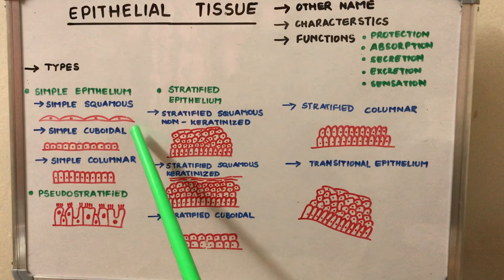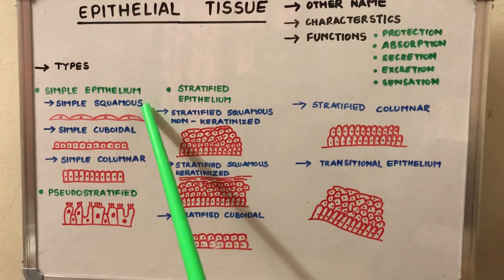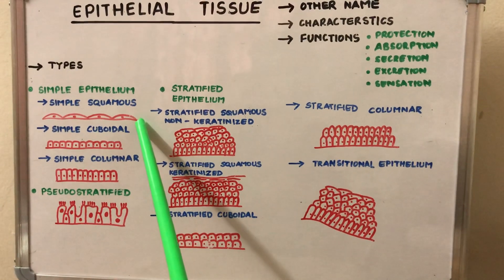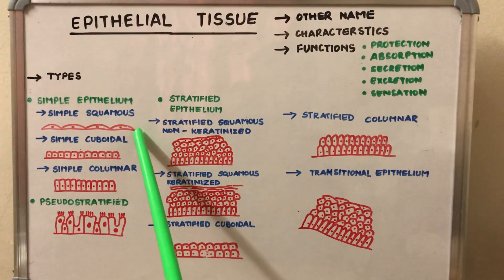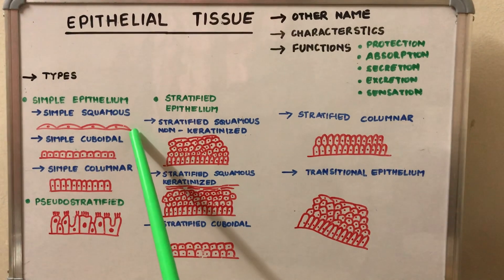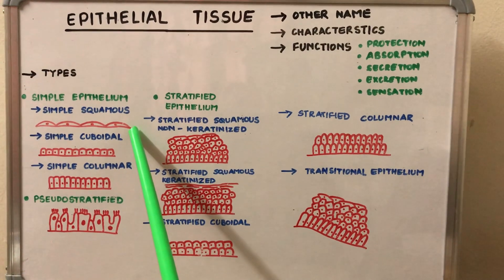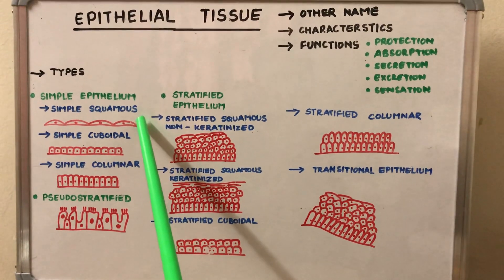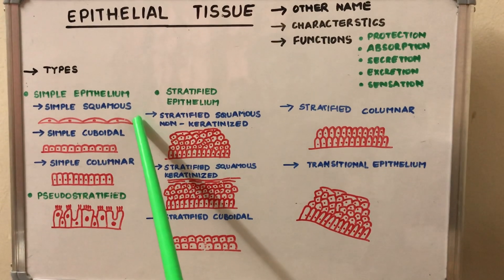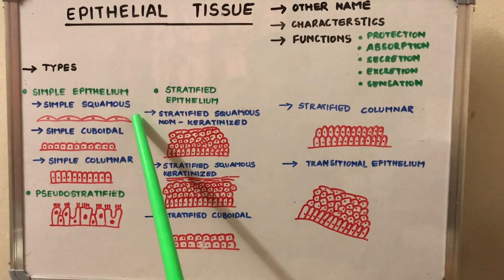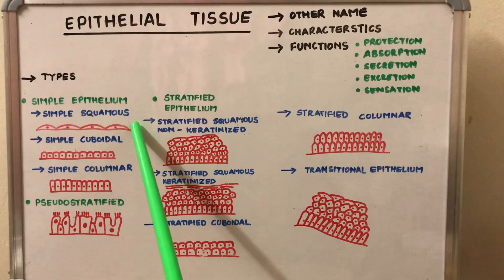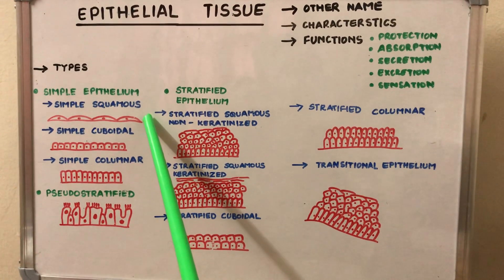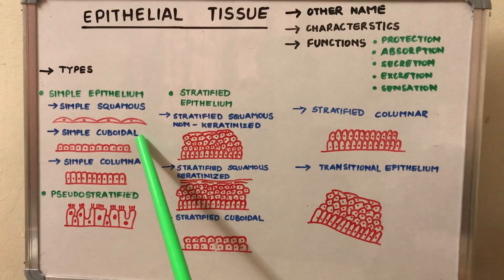Simple squamous epithelium is made up of a single layer of flat cells that lie adjacent to each other. This type of epithelium is meant for exchange of substances. The sites where this type of epithelium is present in our body are the blood vessels, the alveoli, Bowman's capsule, the peritoneum, and the pleura.